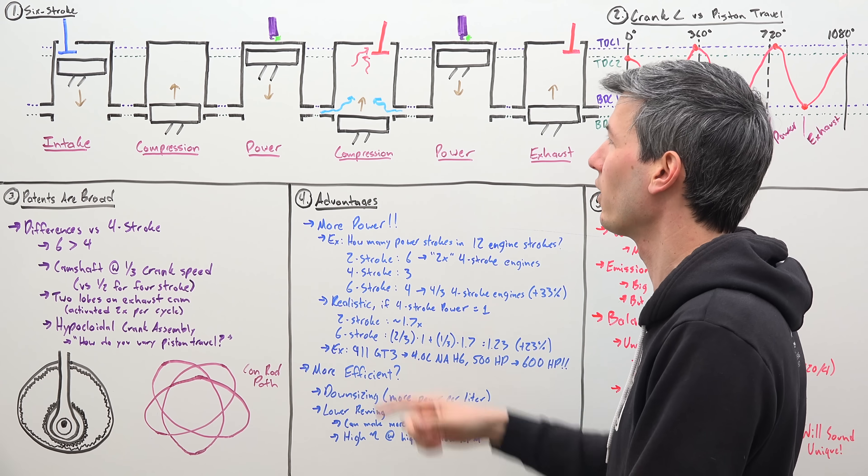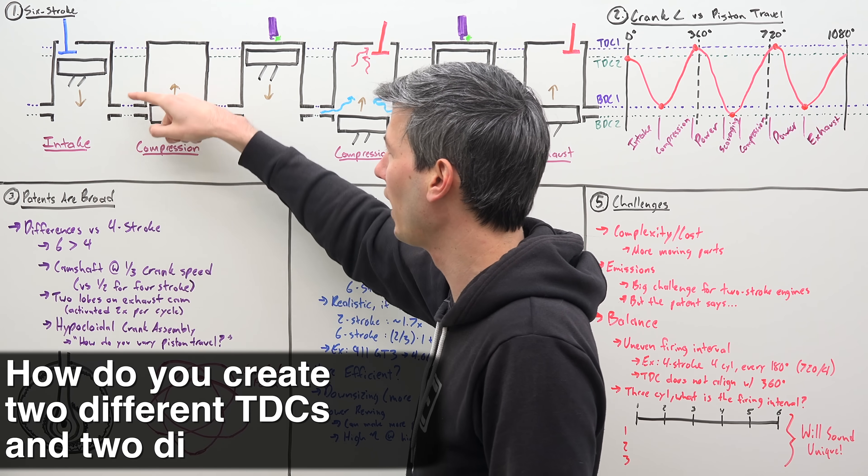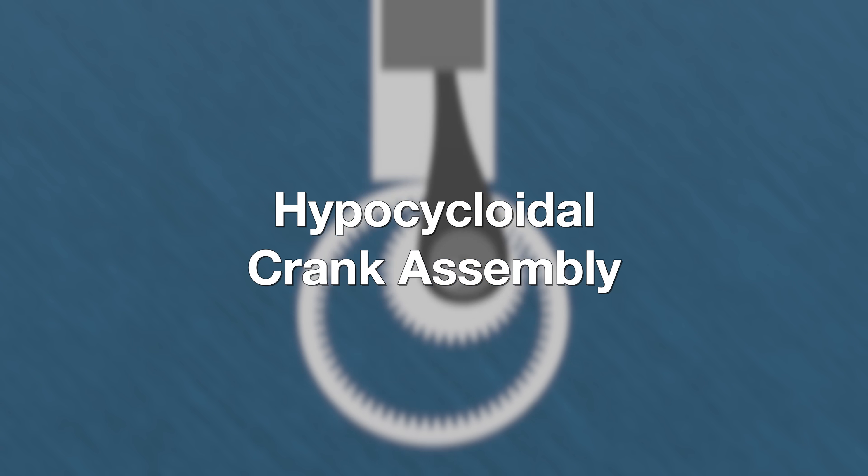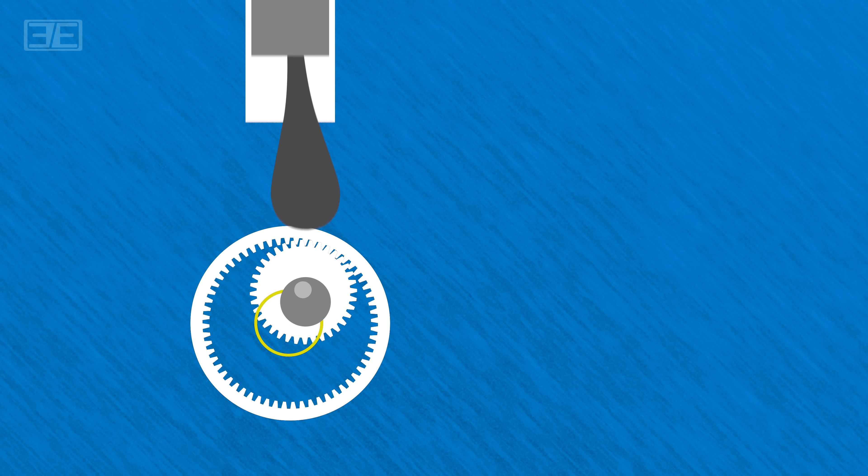And then finally, the big question here is how do you actually create these two different top dead centers and two different bottom dead centers? And that is done using what is called a hypocycloidal crank assembly. So within your crank assembly, you have an outer gear and rotating inside of that is an inner gear. As this inner gear rotates, you can see the center of this gear follows a circular motion and this circular motion is what drives the crankshaft, just like you would have in any other piston cylinder engine. However, where this design differs is that the connecting rod attaches to another circle, which is offset from the inner gear's center.